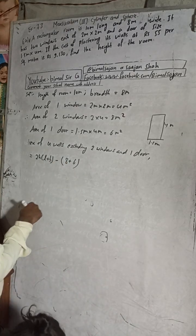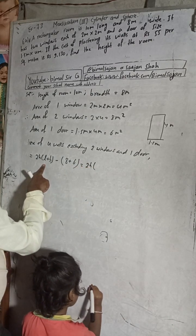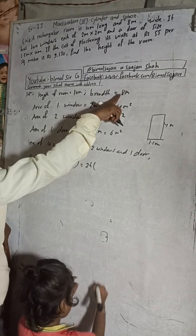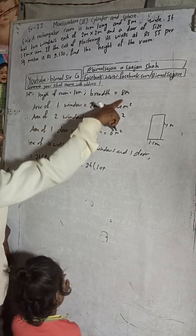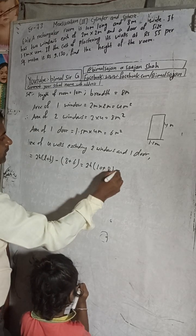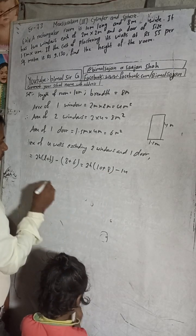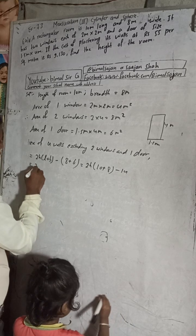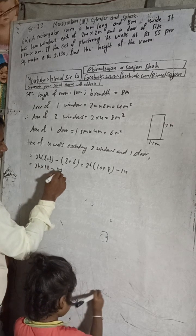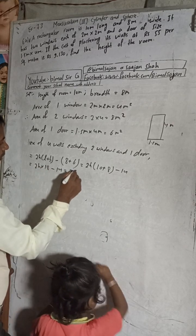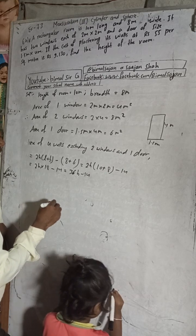Now substituting values: L + B = 10 + 8 = 18, so 2h × 18 = 36h. Therefore, area of four walls excluding windows and door equals 36h − 14 square meters.